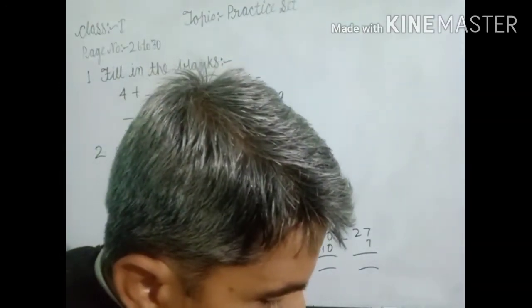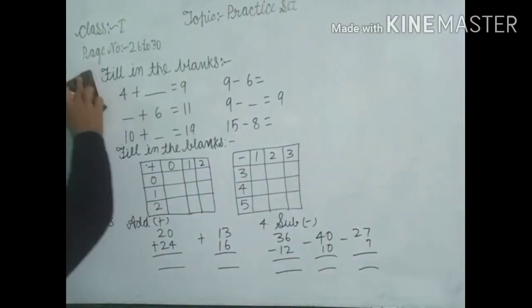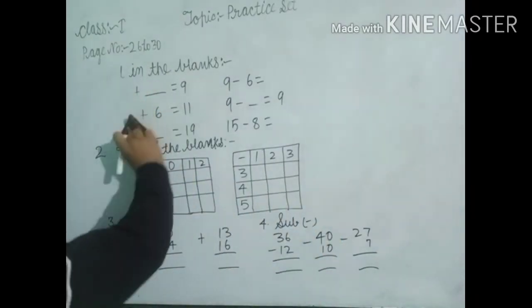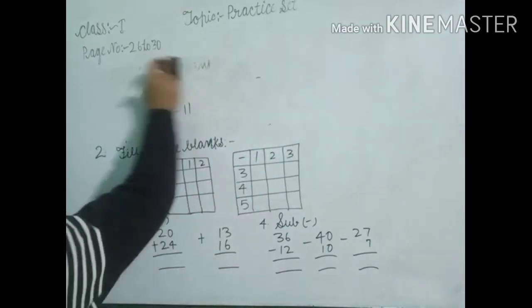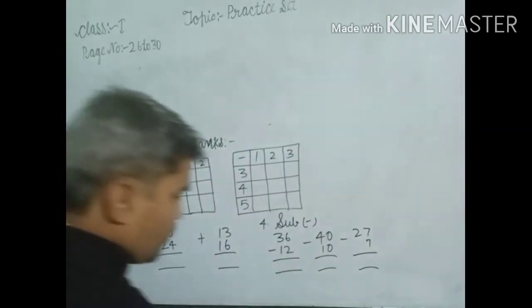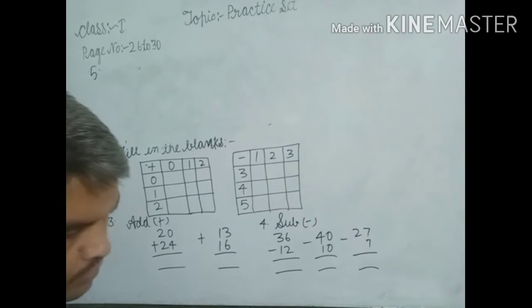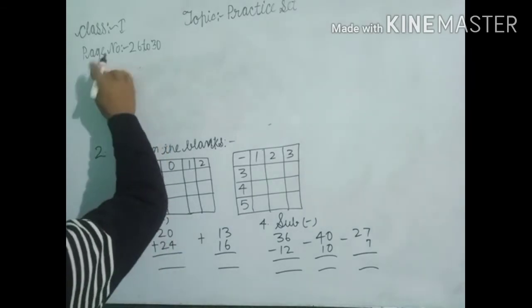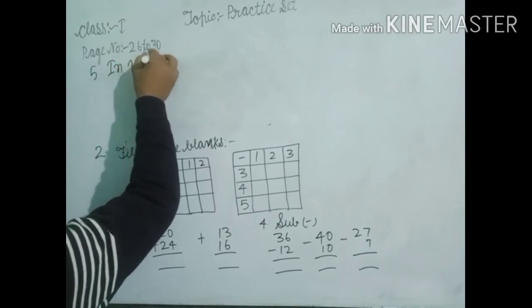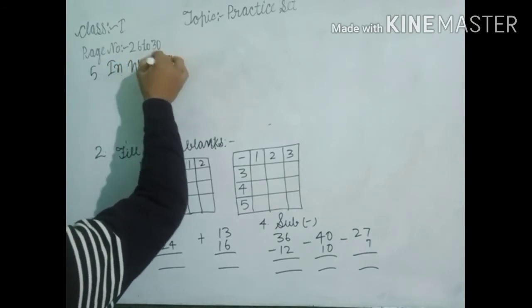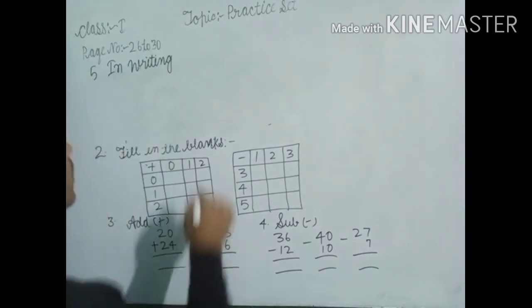And the last questions. Question number 5. In writing, 10, 20, 30, 40, 50.